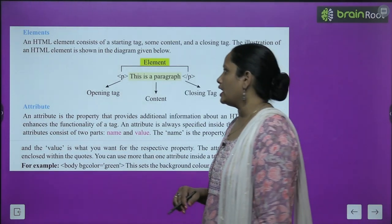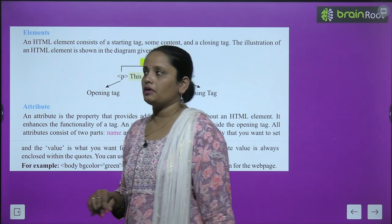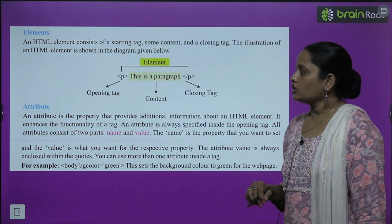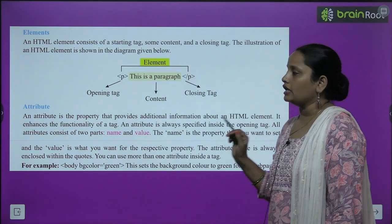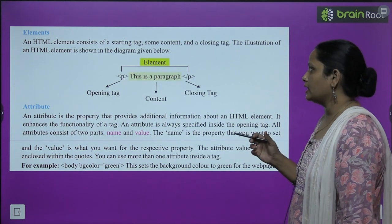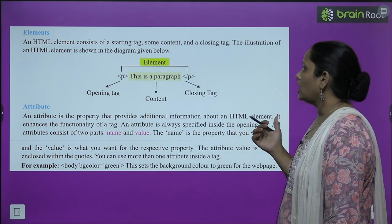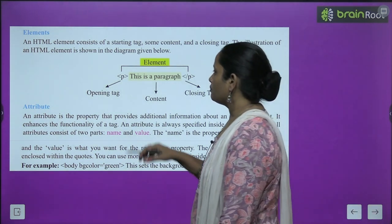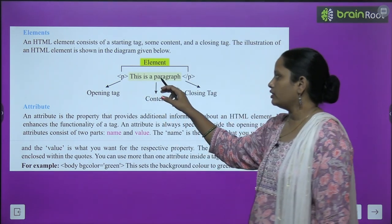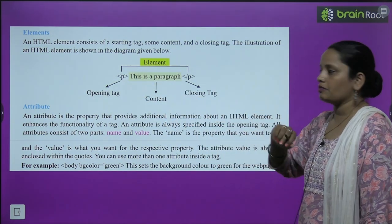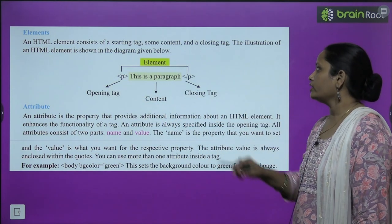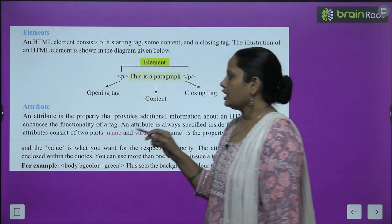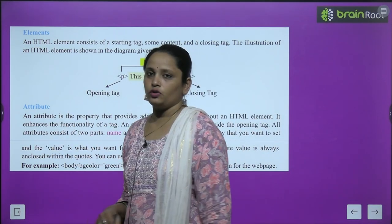Now for elements: an HTML element consists of a starting tag, some content, and a closing tag. For example, you write an opening P tag, then the content 'This is a paragraph,' then the closing P tag.